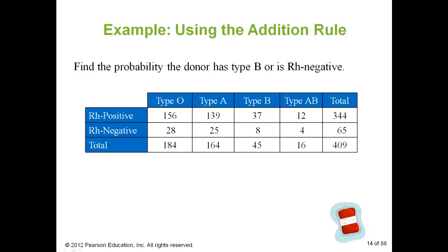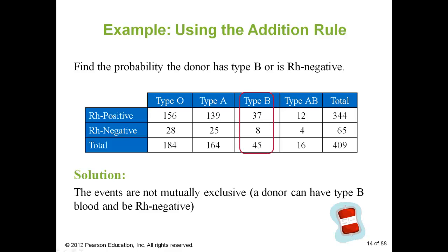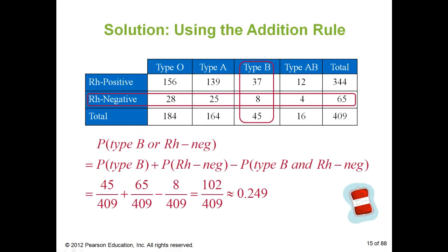Now let's look at the last example: the probability that a donor has either type B blood or is RH negative. Type B is 45 out of 409, and RH negative is 65 out of 409. But we have to subtract the common overlap of 8. So 45 plus 65 minus 8 is 102 out of 409, or roughly 0.249.